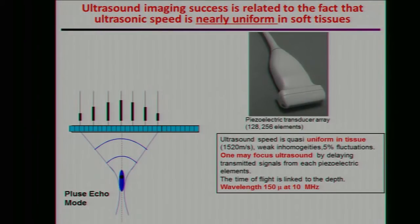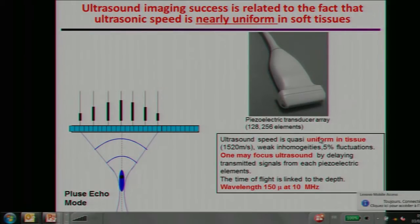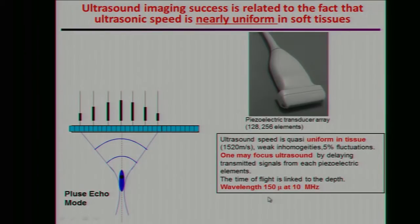Ultrasound imaging has had a lot of success, mainly because the ultrasonic speed is nearly uniform in soft tissue. When you want to make an image with ultrasound, you usually use a piezoelectric transducer array. Because you know the speed of ultrasound, it is quite easy to focus ultrasound where you want. Typically, the frequency we use can be of the order of 10 megahertz, giving you millimeter wavelength or even smaller.